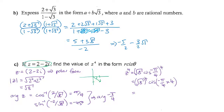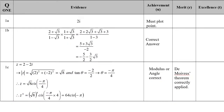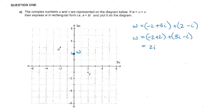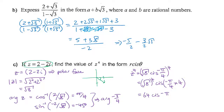That leaves us with 8 times 8, which is 64 cis negative pi. Looking at the marking schedule: a correct answer but you must plot it correctly — correct modulus or correct angle gives you an achieved tick, just one. Then applying the correct theorem and getting your answer gives the full mark. Writing it in the correct form is your achieved tick, and giving either the modulus or the argument — then answering the question — is your merit.